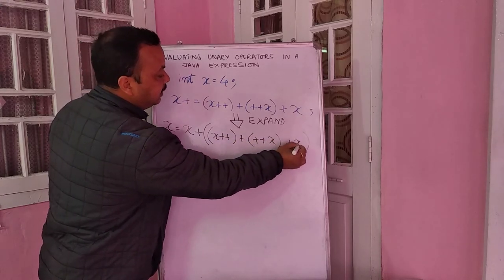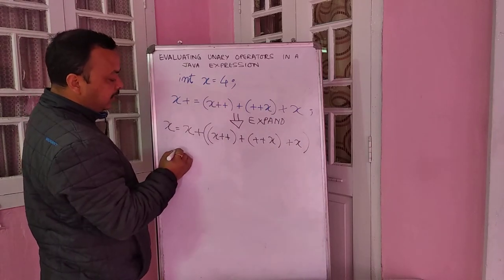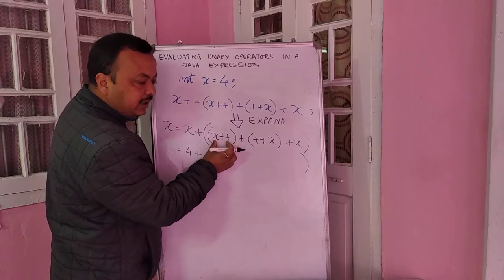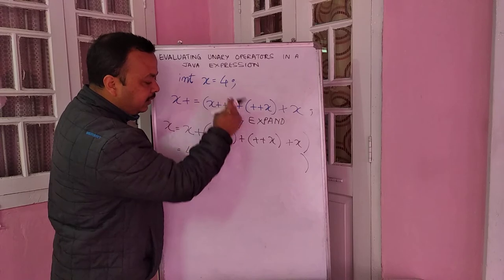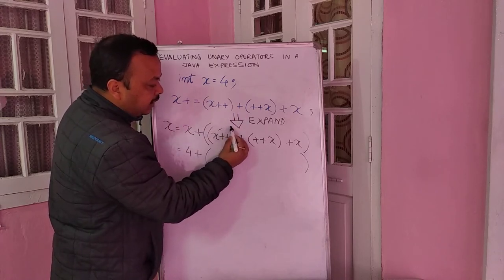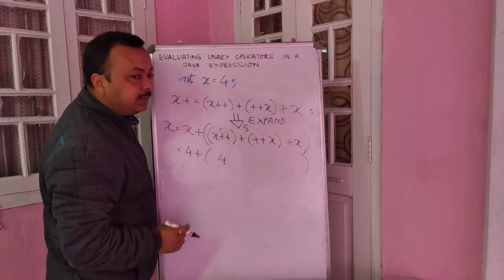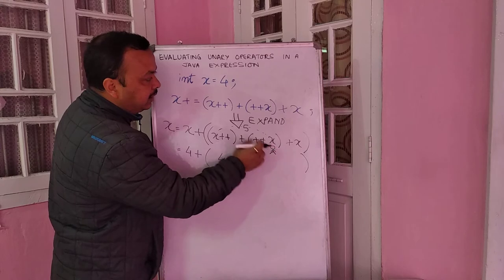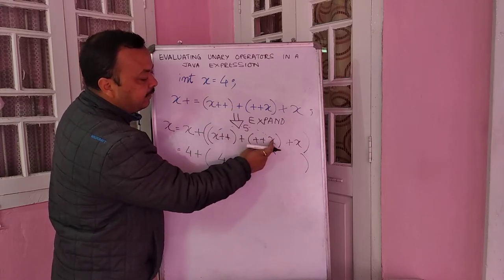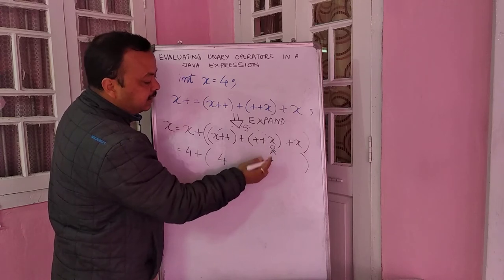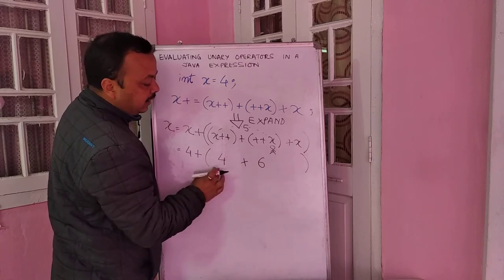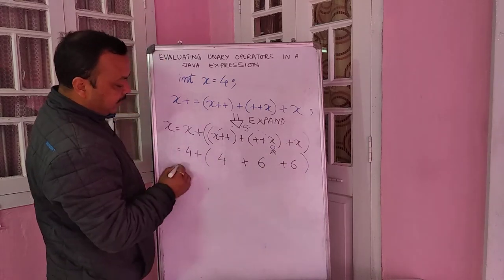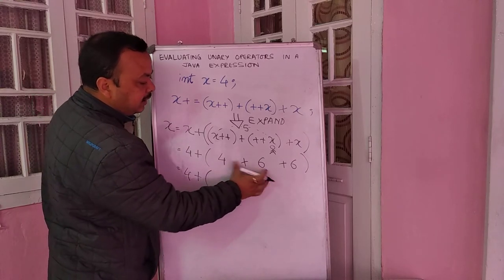The starting value of x is 4. We write 4 plus, then within parentheses: x-plus-plus means use the current value of x, so we write 4, but before it reaches the next expression it has become 5. For plus-plus-x, that is pre-increment, so we take 5 as the base and increment it to 6. So we have 4 plus 4 plus 6, giving 4 plus 6 equals 10, then 10 plus 6 equals 16.